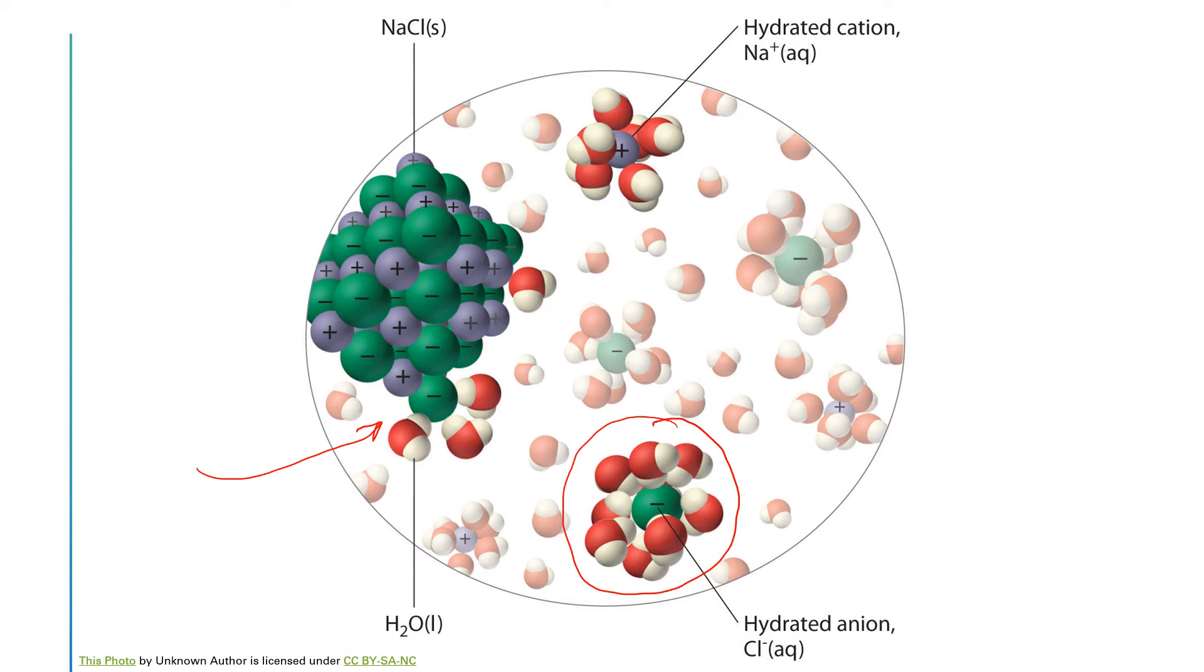If it was a solvent other than water, we would call it solvated, but because it's water we call it hydrated. Up here at the top there's already a positive ion that has been removed, dissolved, and notice that the negative oxygen ends are pointing towards the ion and the positive hydrogen ends are pointing out away from the ion.